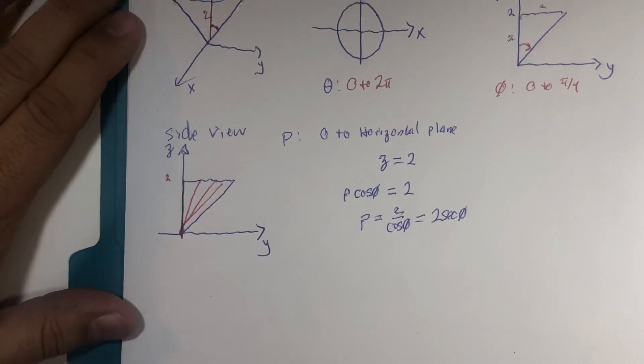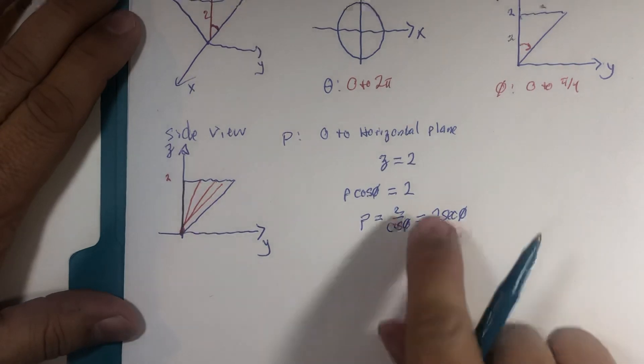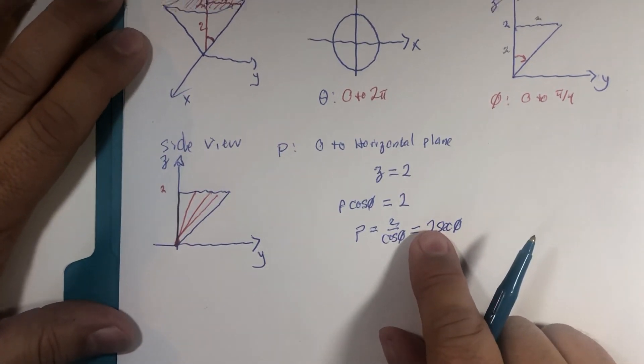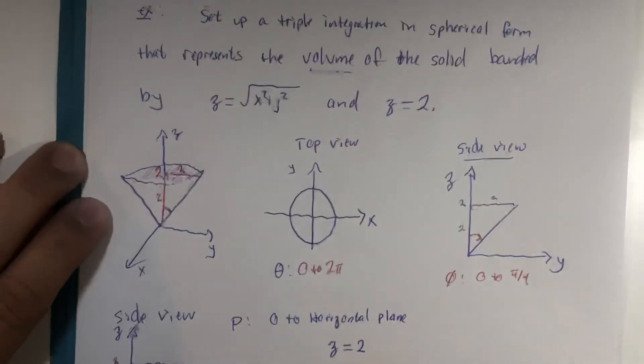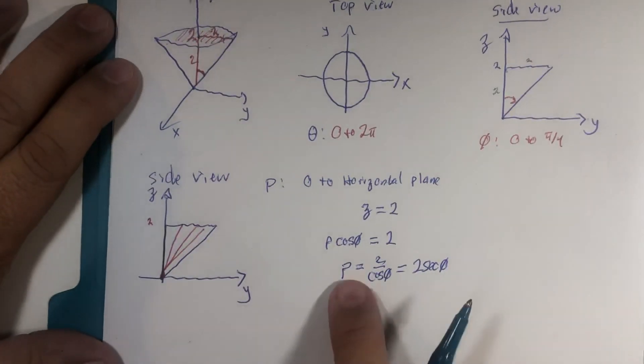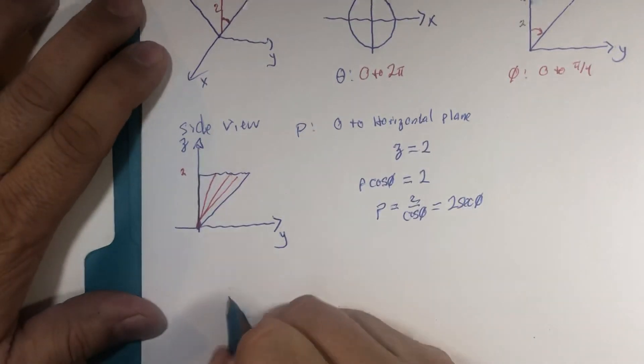All right. I don't expect memorization of all of these in my class. I do expect that you can take a given piece of information such as z is 2 and convert it to the necessary variable with our conversion formulas readily available.